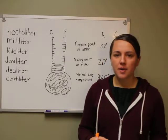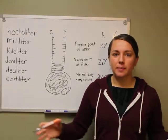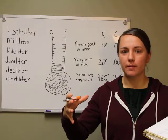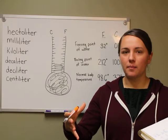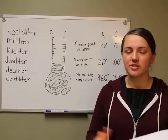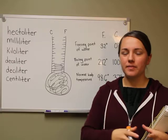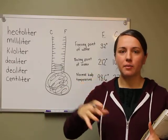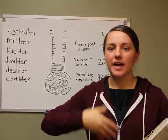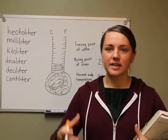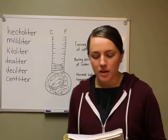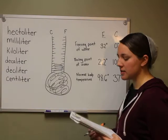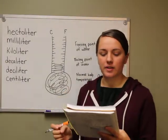So when we're talking about measuring liquids — measuring capacity — we're talking about how much something holds. When we're measuring liquids, we measure it with capacity, talking about how much something can hold. It's different than when we measure length; we're measuring how long something is. Capacity is how much something contains. So the basic unit of capacity in the metric system is the liter, which is a little more than a quart.